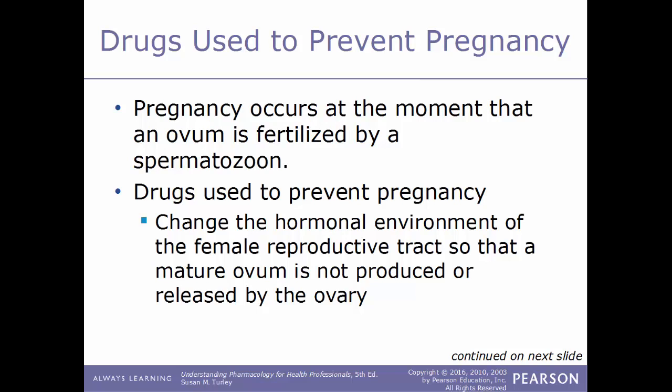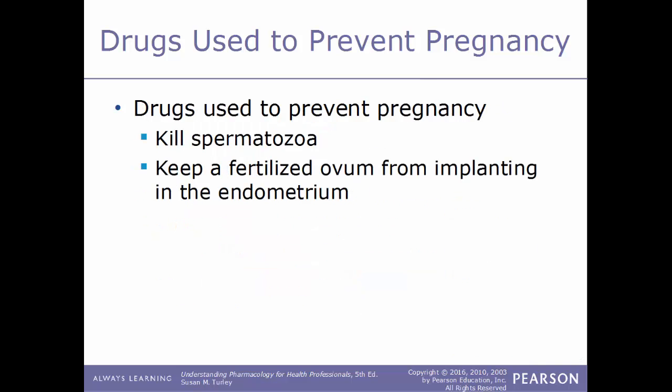First, we'll start the chapter with drugs used to prevent pregnancy. Pregnancy occurs at the moment that an ovum is fertilized by a spermatozoan. Several different drugs are used to prevent pregnancy. Some act by changing the hormonal environment of the female reproductive tract so that a mature ovum is not produced or released. They can also act by killing spermatozoa, or by keeping a fertilized ovum from implanting within the endometrium.